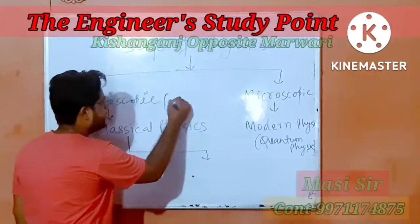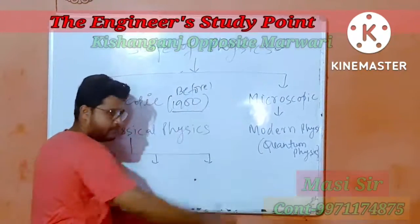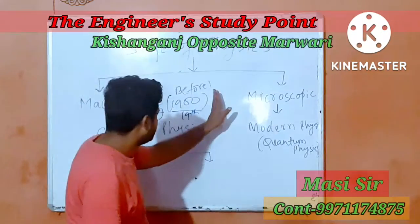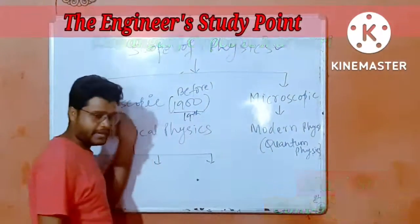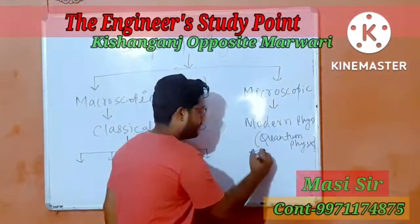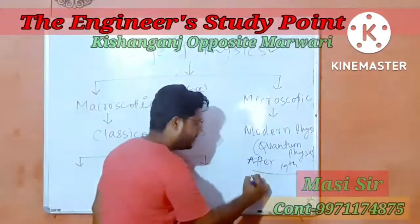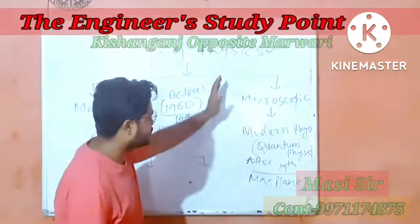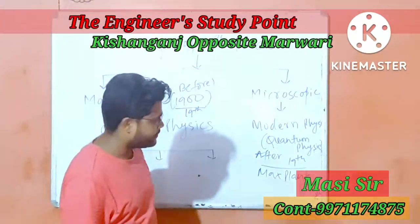Before 1900, in the 19th century, this is the range of all degrees — this is called macroscopic or classical physics. And after the 19th century, invented by Max Planck, this is called microscopic, modern physics, or quantum physics.